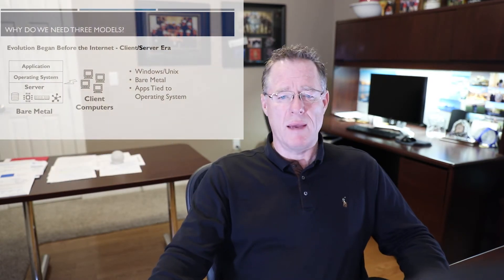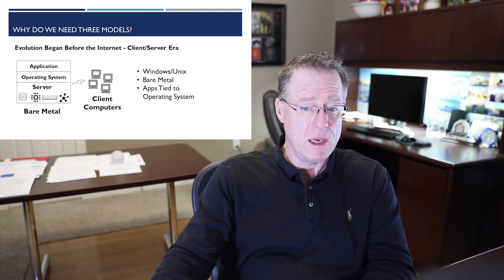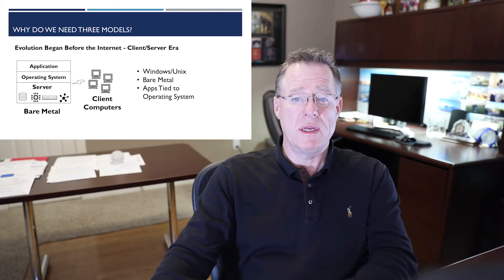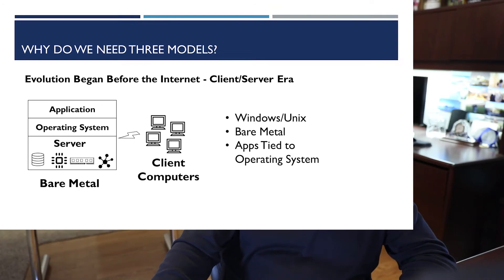Now let's go back in time and understand how we got where we are. During the client-server era, servers ran monolithic applications that responded to hundreds or thousands of client requests at any given moment. The prevalent operating systems were Windows and Unix running the servers bare metal, and many versions of Unix were popular. Because the applications were tied to the operating system, application providers had to support many different operating systems, which slowed innovation. Applications tied to the advances of the underlying operating system kept us all from going further at the pace that we needed to.